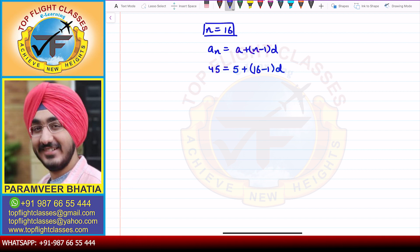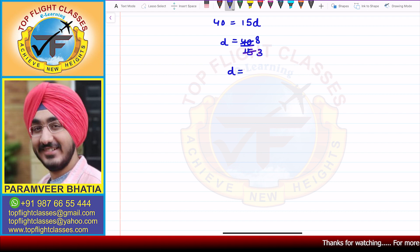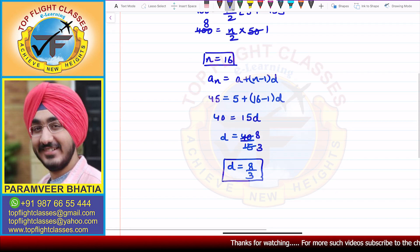So here we have 45 minus 5, that is 40, is equal to 16 minus 1, that is 15, times d. So d is equal to 40 by 15. Cancelling with 5, we get d is equal to 8 by 3.